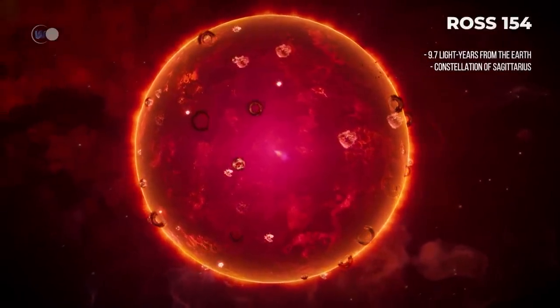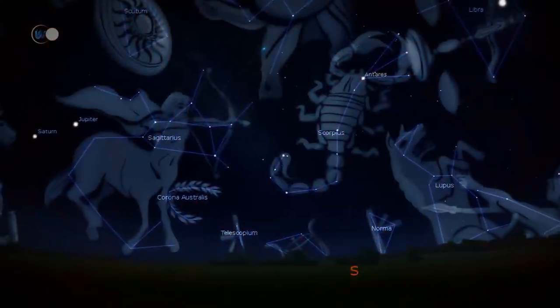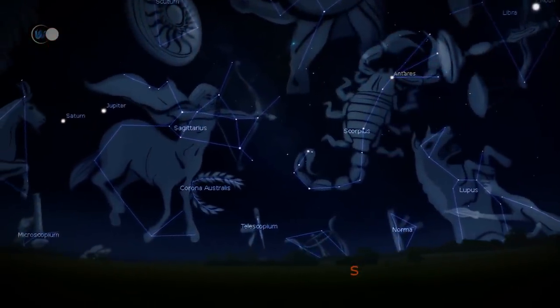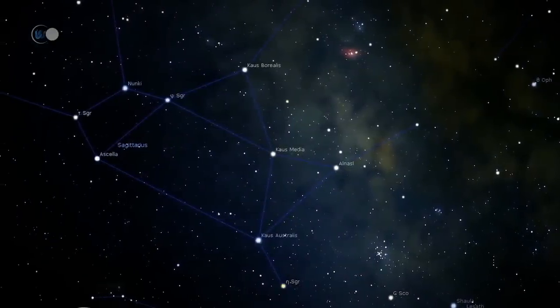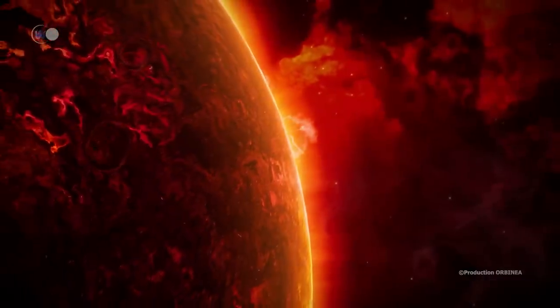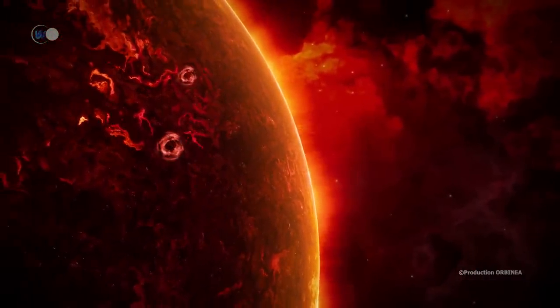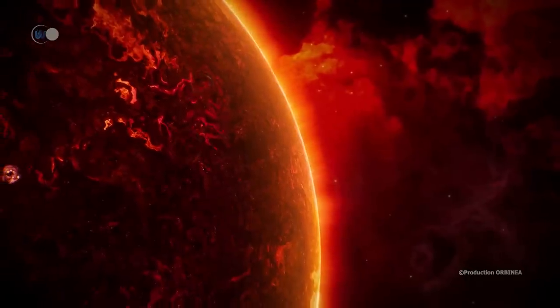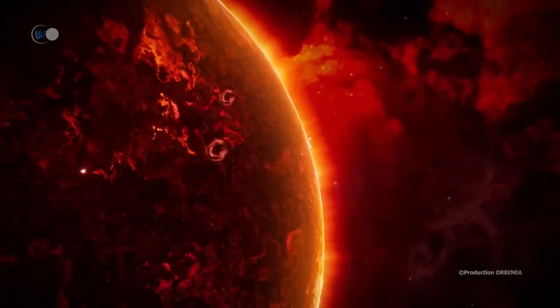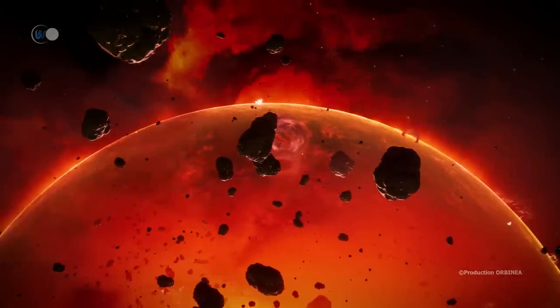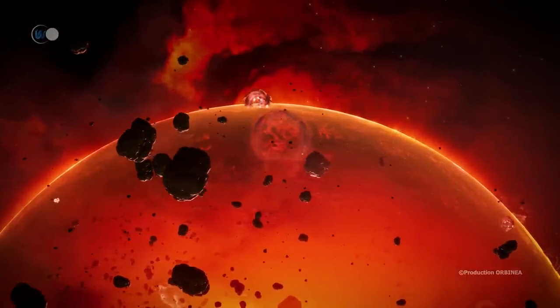Ross 154 is the ninth closest star system to our Sun. Located in the constellation of Sagittarius, it is 9.7 light-years away. Composed of a main-sequence star of spectral class M3.5V, it is not visible to the naked eye from our Earth. Ross 154 is therefore, by definition, a red dwarf star, cold and dark. Its discovery by Frank Elmore Ross dates back to 1925.